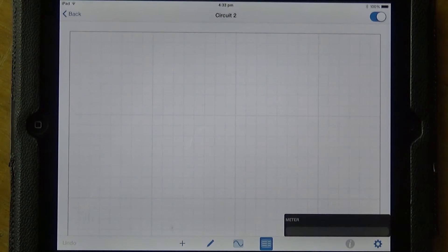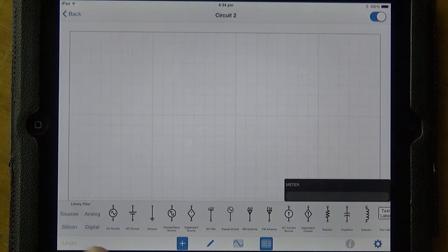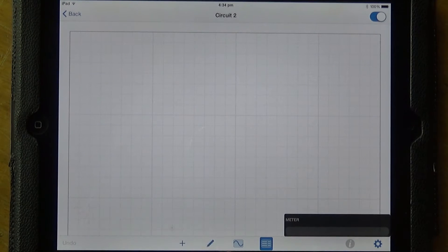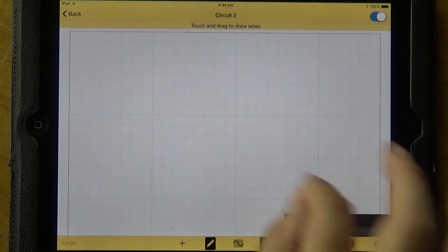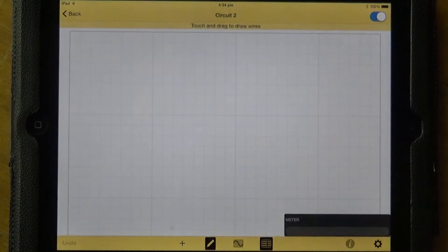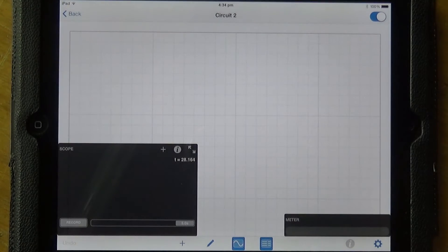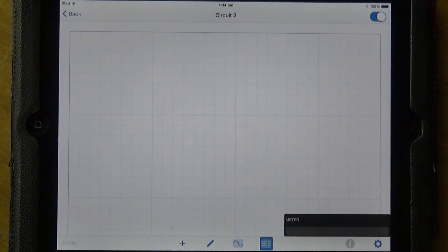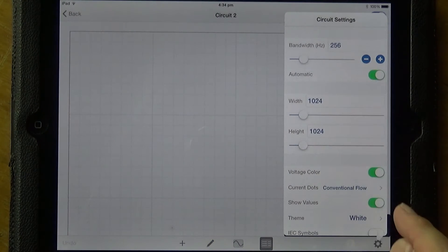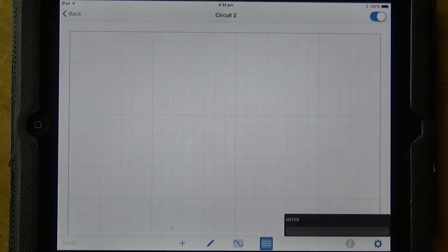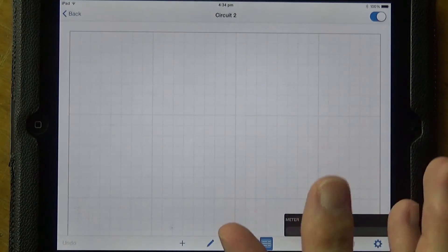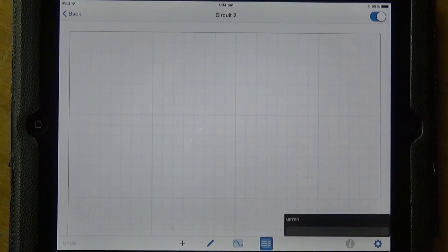Now down the bottom here you've got a plus sign which opens up all of the tools. You have a pencil which actually draws wires, your oscilloscope and a multimeter. And you can configure some of the options through the circuit settings and other bits and pieces just with the settings button down the bottom right hand corner. But this is quite nice to use and I found this very intuitive.